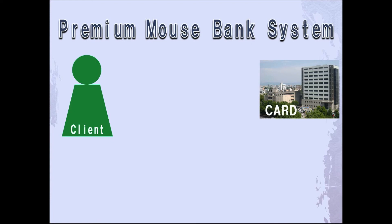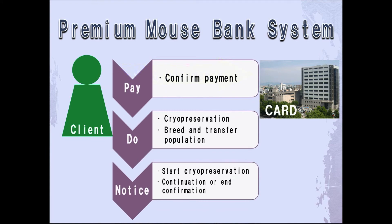Now, I will talk about the premium mouse bank system. First, the client should send CARD the relevant documents. Upon reception of the documents, CARD will send an invoice to the client. Once payment has been confirmed, CARD will accept mice and carry out cryopreservation or prepare a mice population according to the client's request. As soon as the client's request has been completed, CARD will publish a notice of starting cryopreservation. Exactly a year after cryopreservation takes place, CARD will confirm with clients whether they would like to continue cryopreservation or not.